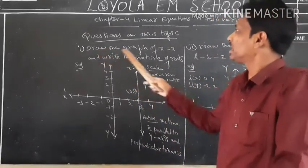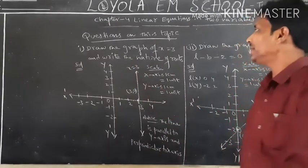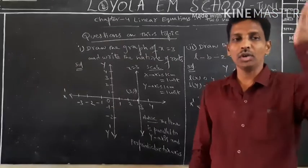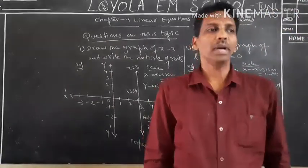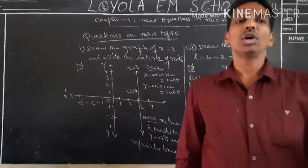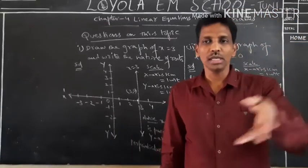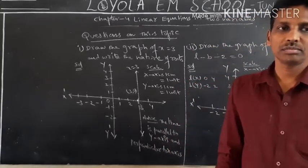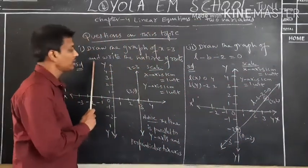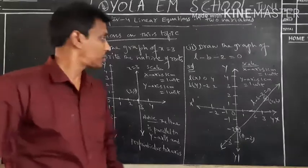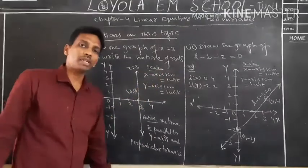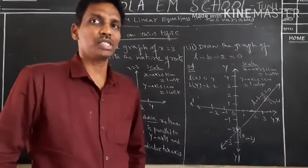The first question: draw the graph of x = 3 and write the nature of the roots. We know how to draw a graph using a graph sheet, how to divide it into four quadrants by drawing the x-axis and y-axis, and how to choose a suitable table of values. I took a scale: on the x-axis, one centimeter equals one unit, and on the y-axis, one centimeter equals one unit.